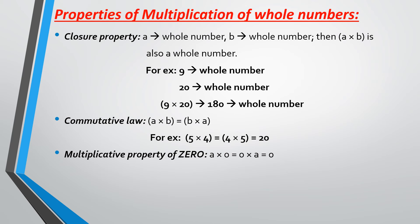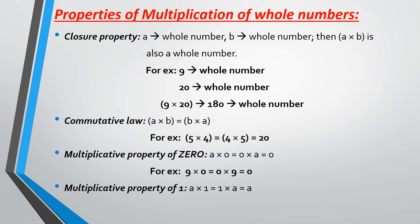Multiplicative property of 0: when A is a whole number and you multiply it with 0, the answer will always be 0, and 0 is also a whole number. When 9 is multiplied by 0, the answer is 0, and even if you do 0 multiplied by 9, the answer is still 0. Any number multiplied by 0, the answer will be 0 itself.